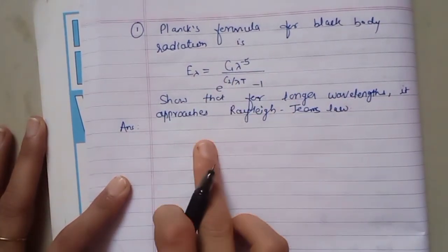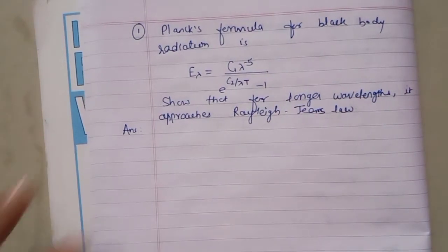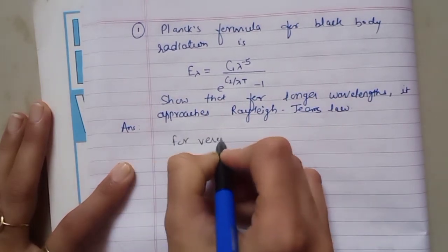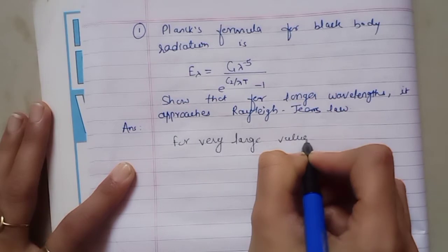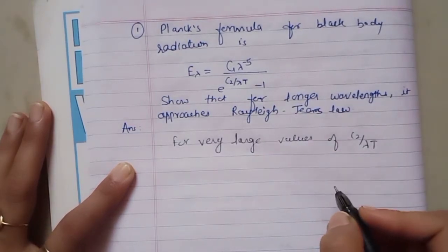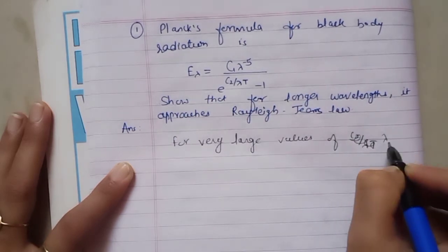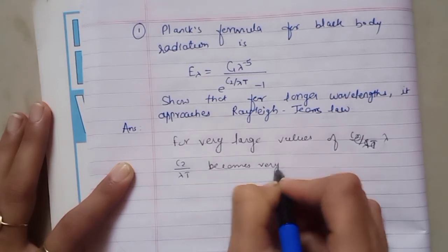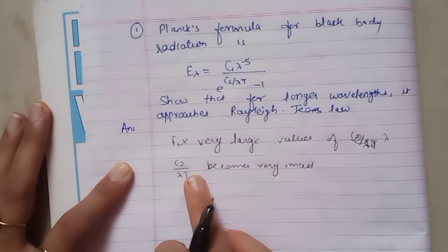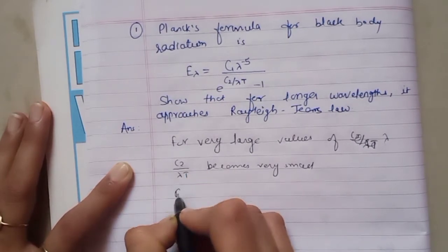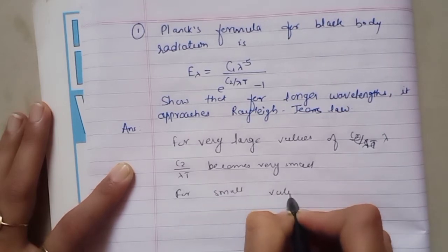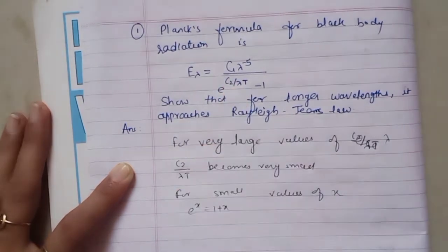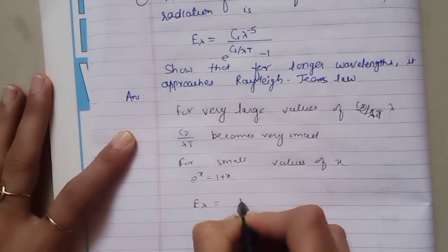So Planck's formula is given. We want to show that for longer wavelengths it approaches Rayleigh-Jeans law. For very large values of lambda, C2 upon lambda T becomes very small. We have a formula for small values of x: e raised to x equals 1 plus x.